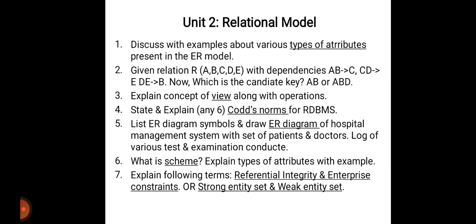Unit two is the relational model. The first question is to discuss various types of attributes present in the ER model — list different types of attributes with explanation and diagram. The second type of question gives a relation R with attributes ABCDE and functional dependencies like AB→C and CD→E, and you have to find the candidate key, primary key, or foreign key. You need knowledge of all these keys.